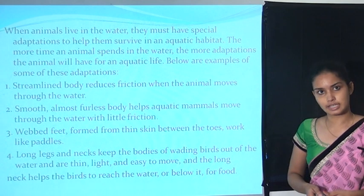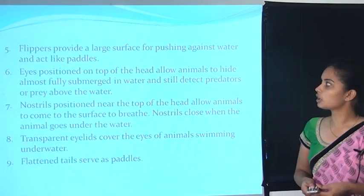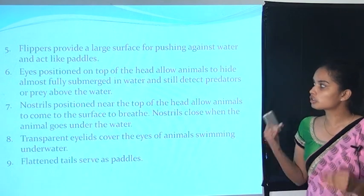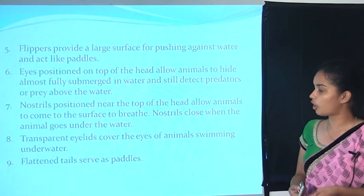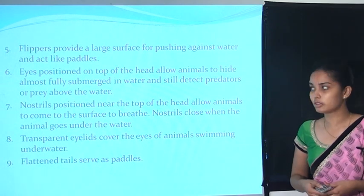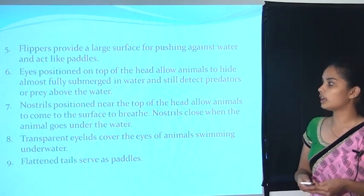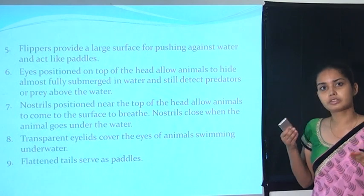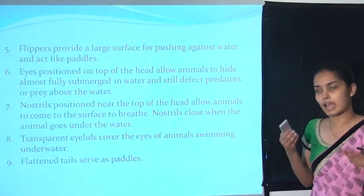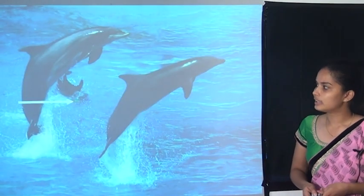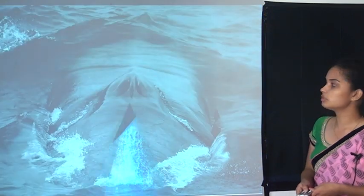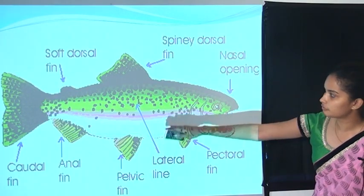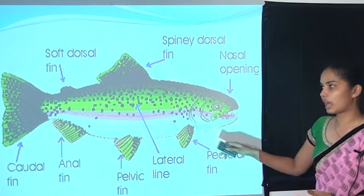Aquatic birds use their long necks to reach into the water for fish. Flippers provide a large surface for pushing against water and act like paddles. Eyes positioned on top of the head allow animals to hide almost fully submerged and still detect predators or prey above the water. Nostrils positioned near the top of the head allow animals to surface and breathe, and close when the animal goes underwater. Transparent eyelids protect the eyes while swimming, and flattened tails also serve as paddles. Counter shading decreases visibility.